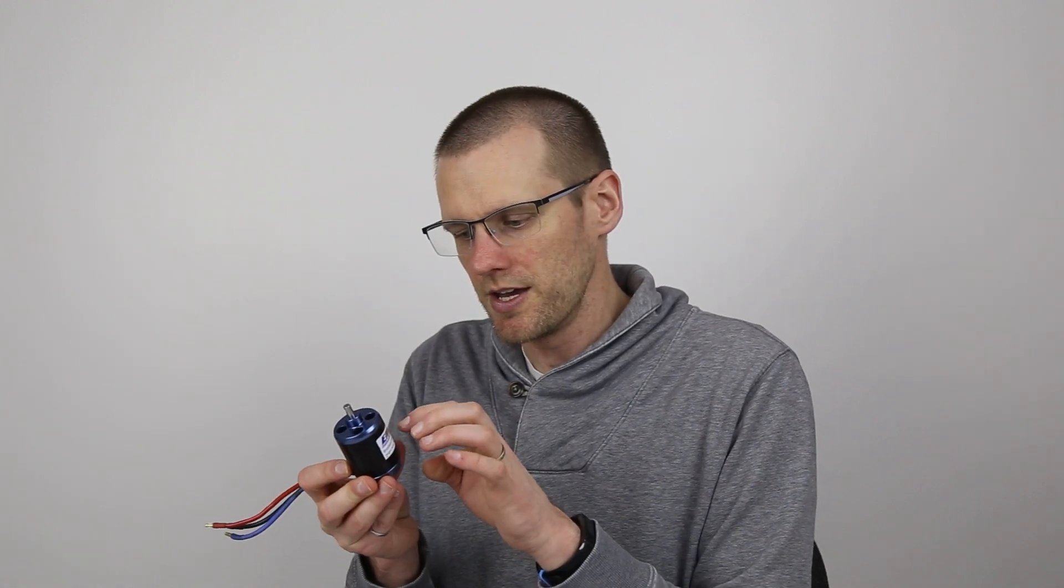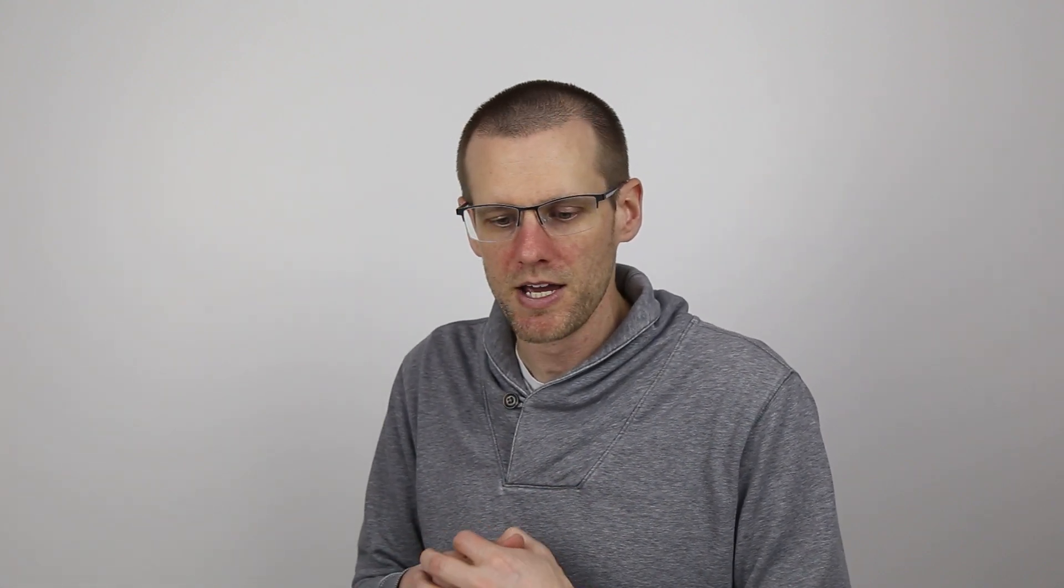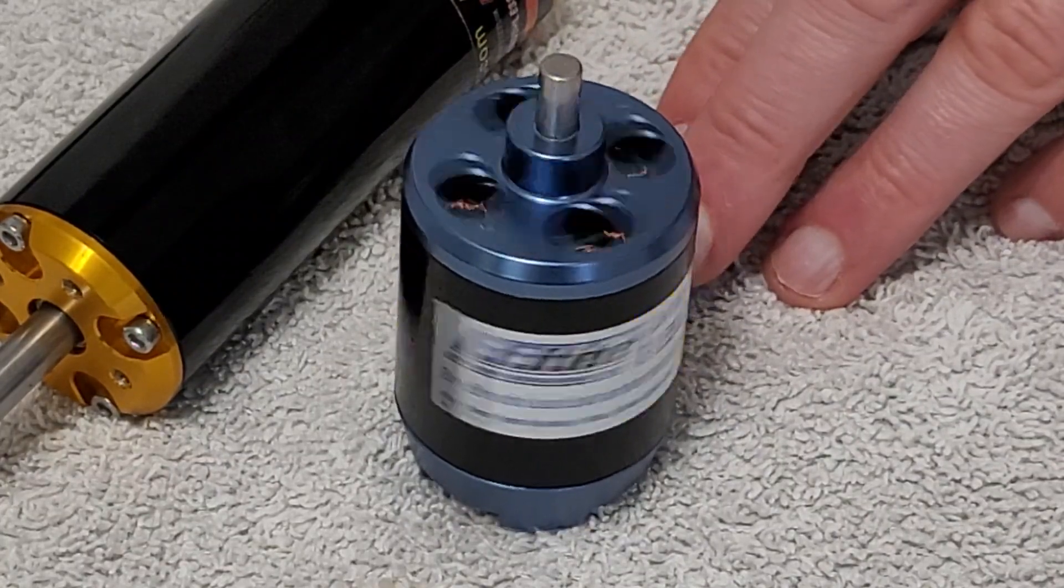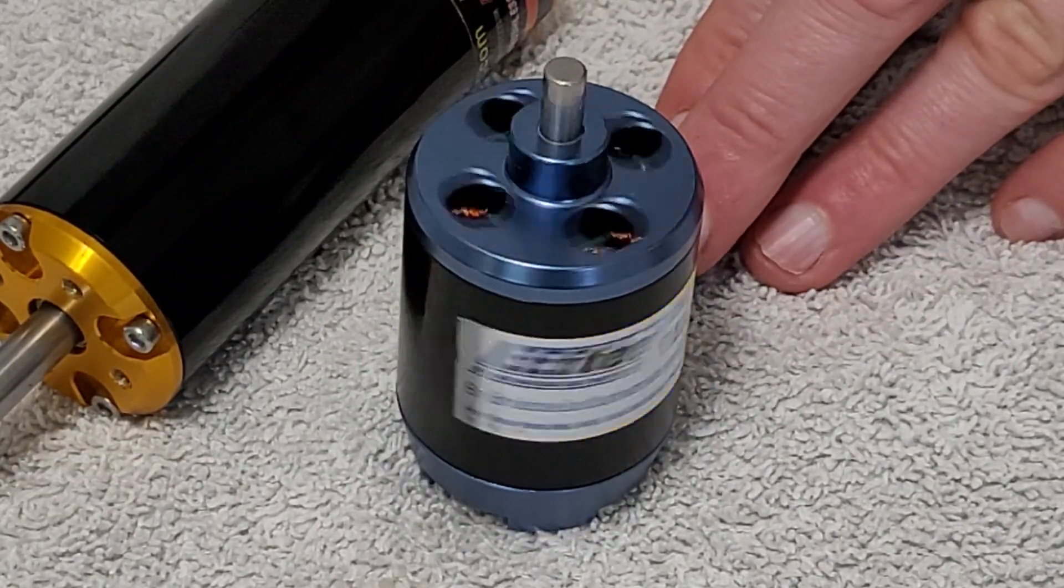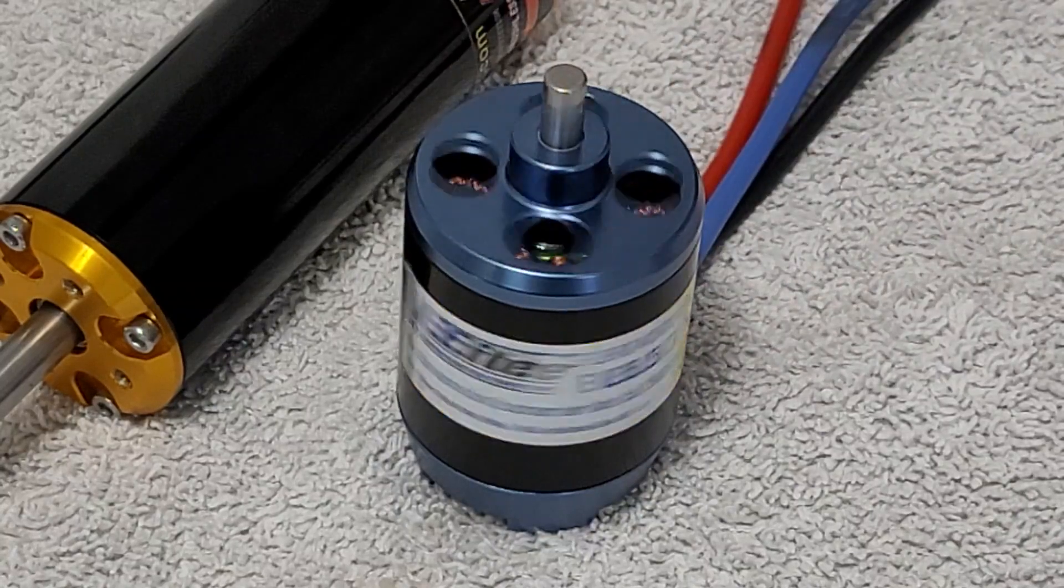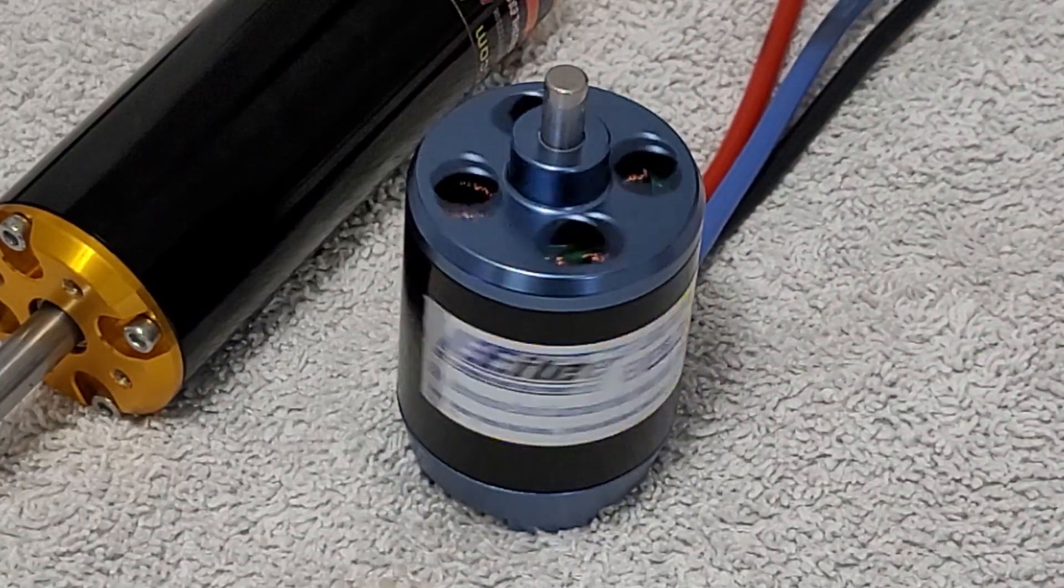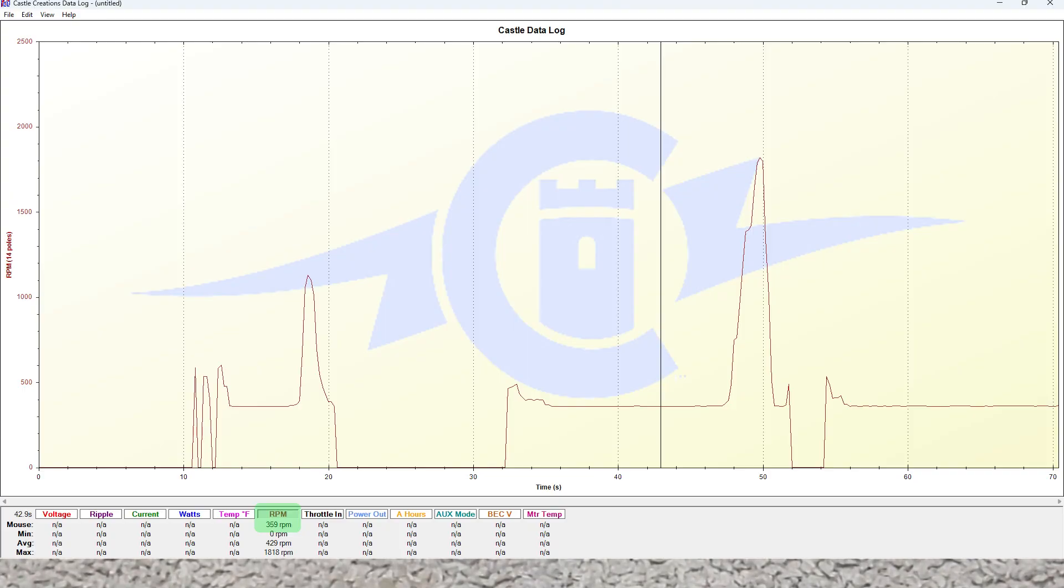Now we can do the exact same thing, we can swap out the inrunner for this specific outrunner motor. This is a 525 kV motor, we're going to operate this also on the 14.8 volt battery, this is a 4S LiPo battery pack. So here we're firing up that motor, and you can see that it's idling now, we take the data log from this,